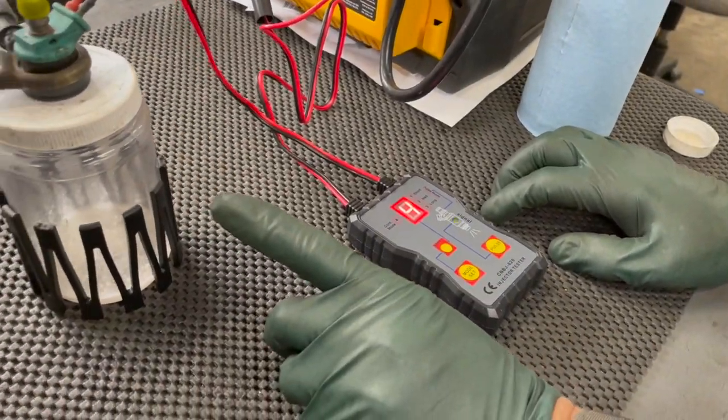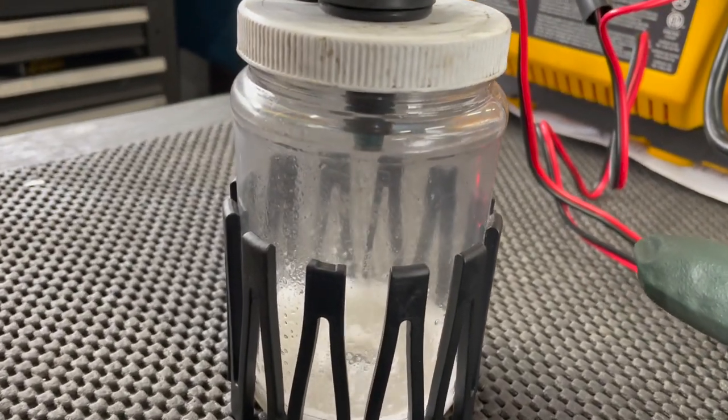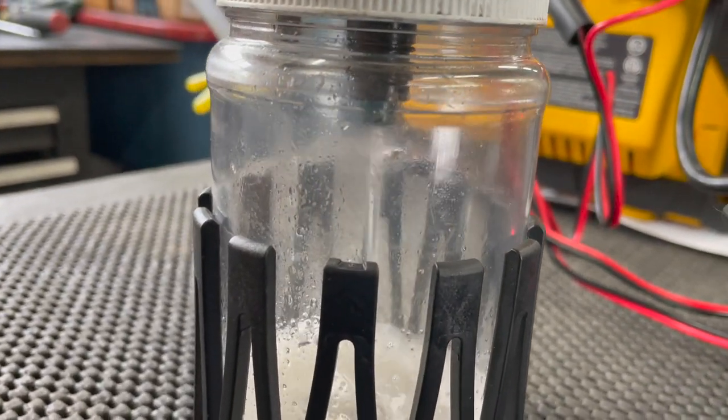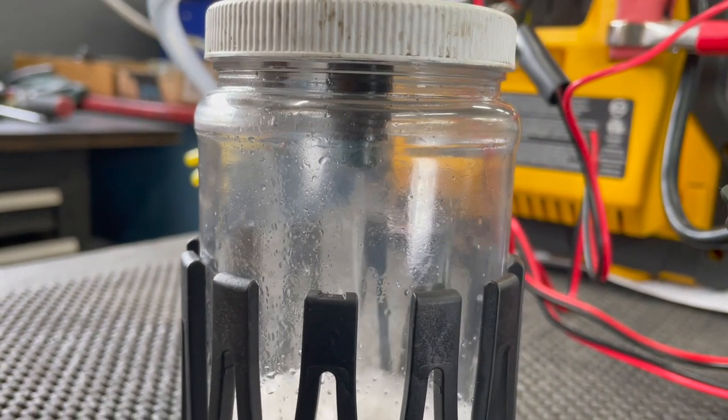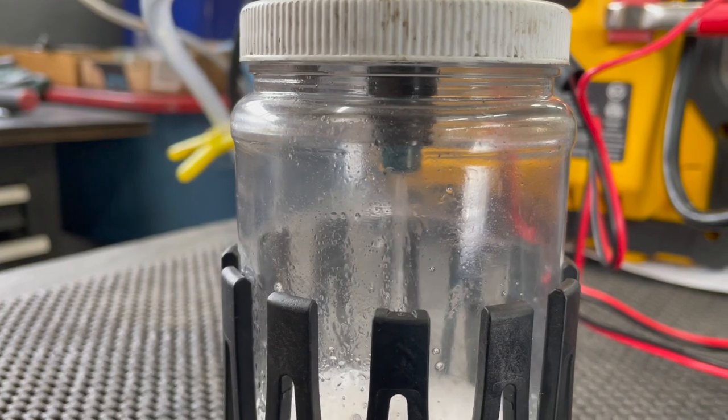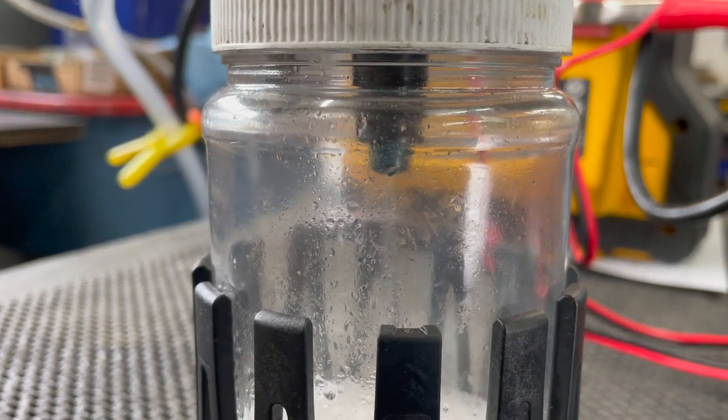Okay, look at that. Now it's pulsing the injector and rapidly opening and closing it. And if this is just a matter of dirt or varnish on the tip, this will clean it out and it won't leak.